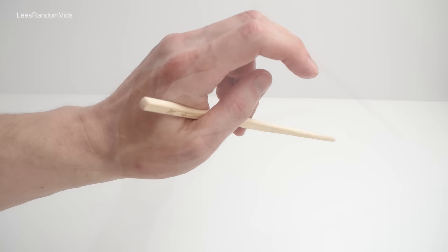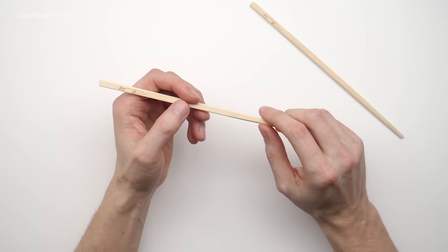Now for the top chopstick. You want to hold it between your thumb and your first and second finger, a little bit like when you're taught to hold a pencil.